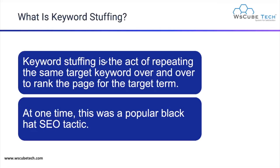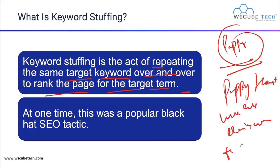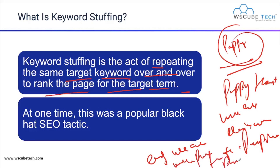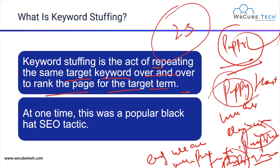Keyword stuffing is the act of repeating the same targeted keyword over and over to rank the page for a targeted search term. For example, using a keyword like 'copy' repeatedly in just two or three sentences — such as 'we are doing work for copy and we are also planning for copy' — that is known as keyword stuffing. It means intentionally using one particular keyword many more times so that the content will rank on Google.